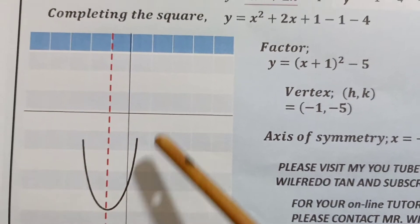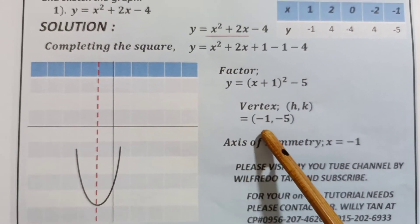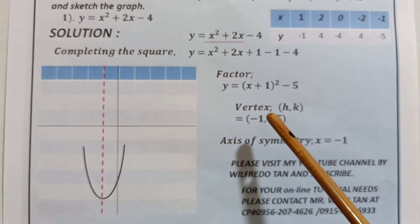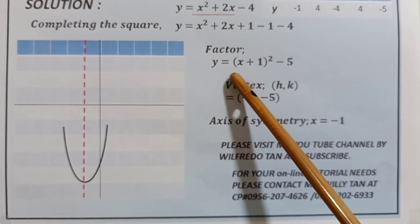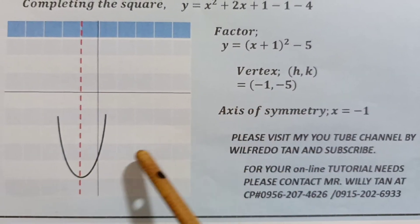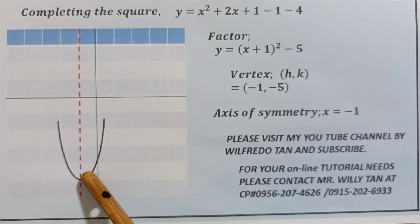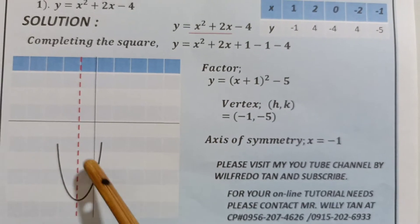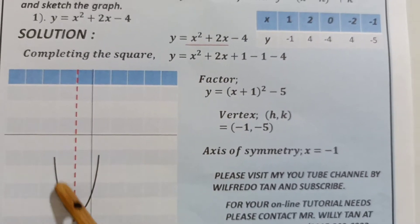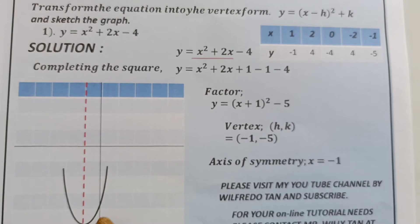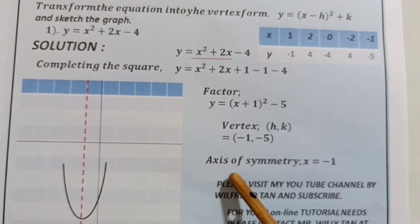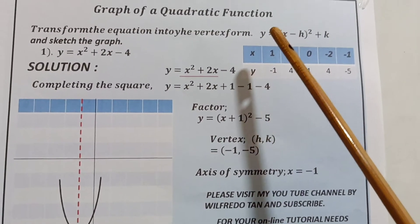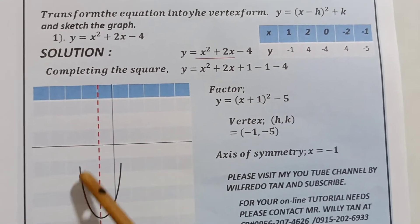The axis of symmetry is equal to negative 1, which is the x-value in the vertex form. Then we assign more values to get the whole form of the curve. After getting the vertex form and assigning values for x and y, we graph the parabola.